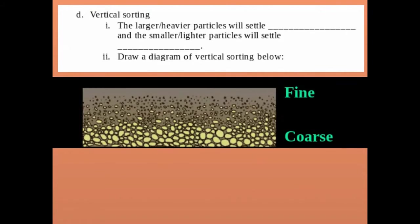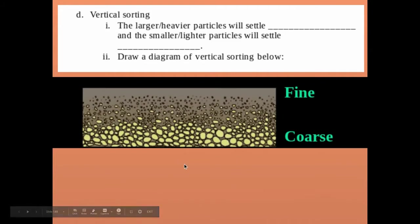Draw the vertical sorting diagram in your notes. Make sure you include all the particles — don't leave any out. You'll have the coarsest at the bottom progressing to the finest at the top.